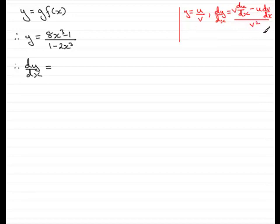So let's go straight in and do that. So according to the formula, it's the bottom of the fraction, so we'll have 1 minus 2x cubed, multiplied by the differential of the top, so that's going to be 24x squared. Put everything in brackets, then it's minus,